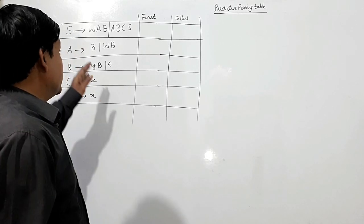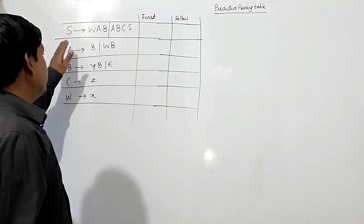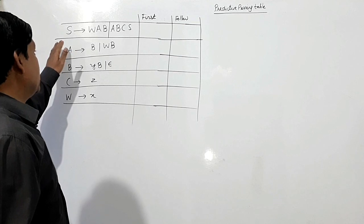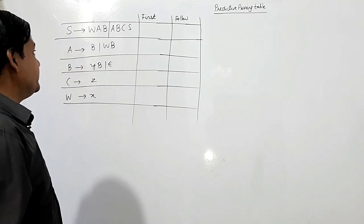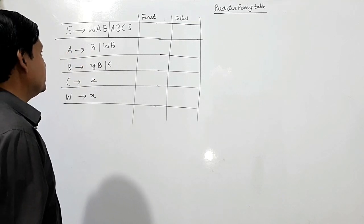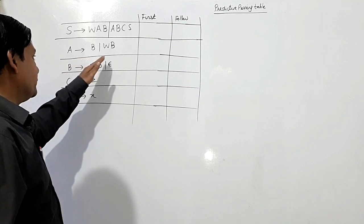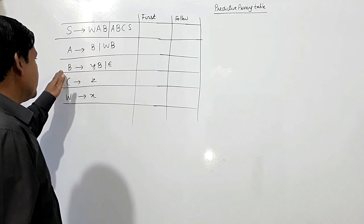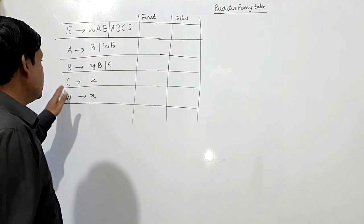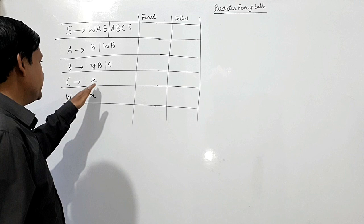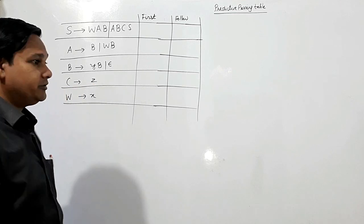We shall construct a predictive parsing table for the grammar: S produces WAB or ABCS; A produces B or WB; B produces YB or Epsilon; C produces Z; and W produces X.